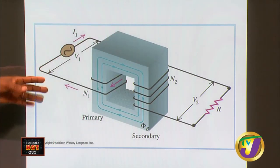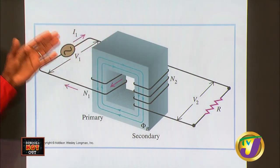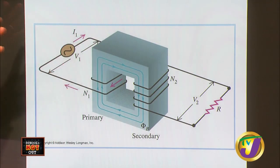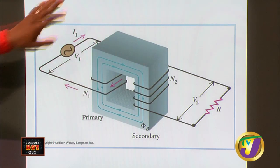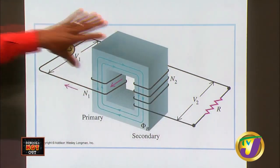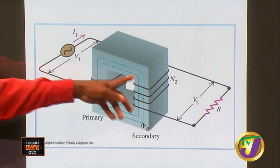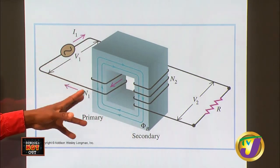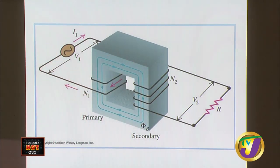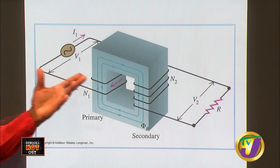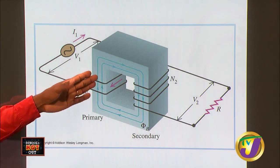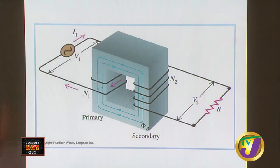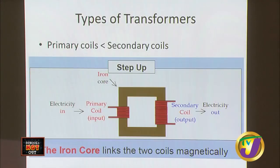So AC is what is used in transformer applications. We have the primary, secondary, power source, and load, with voltages measured across them. Another term you must be familiar with is N — representing the number of turns of the coils. If you have 10 wrappings, N is 10; if 100 wrappings, N is 100. This applies to both the primary section (NP) and the secondary section (NS). When it comes to transformers, there are two main types: step up and step down.